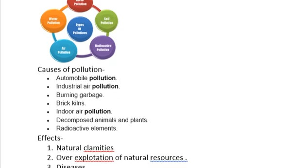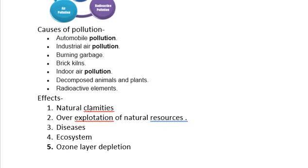Now the effects of pollution. The effects include natural calamities like fire, flood, drought, and earthquake — all of these come due to pollution. Overexploitation of natural resources means if we are not using them properly, one day they will finish and then you will realize what we have lost. Diseases in human beings — like COVID-19 last year, which we are still facing — also result from pollution. The ecosystem is being disturbed, and ozone layer depletion is occurring, which you will learn more about later in your studies.